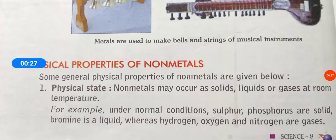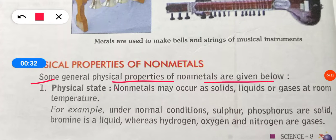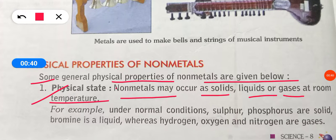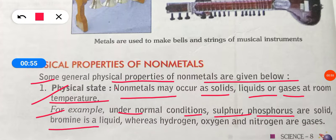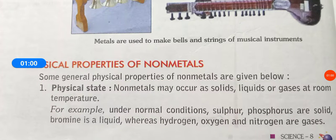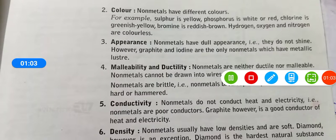Now, the physical properties of non-metals. The first property is physical state. Non-metals may occur as solid, liquid, or gas at room temperature. For example, under normal conditions, sulfur and phosphorus are in solid form, bromine is in liquid form, whereas hydrogen, oxygen, and nitrogen are in gas form.